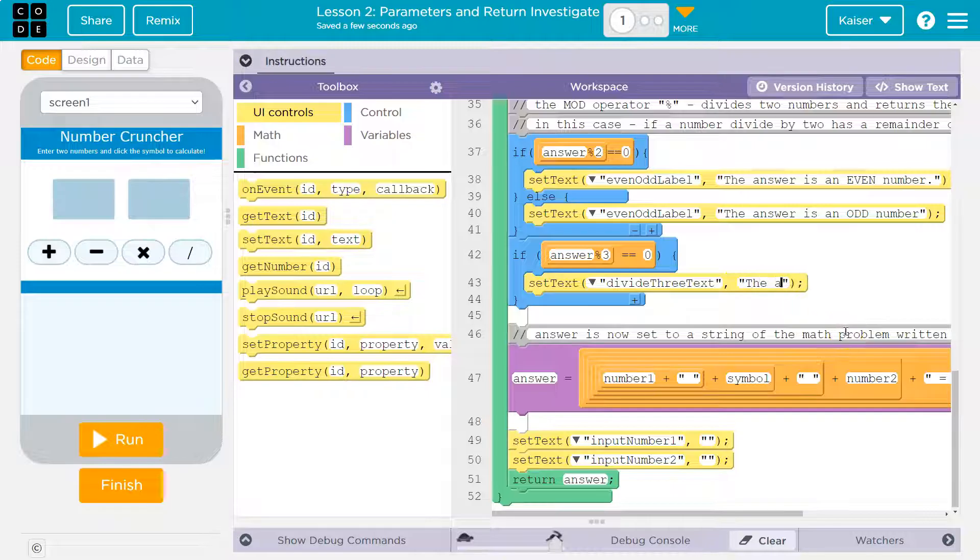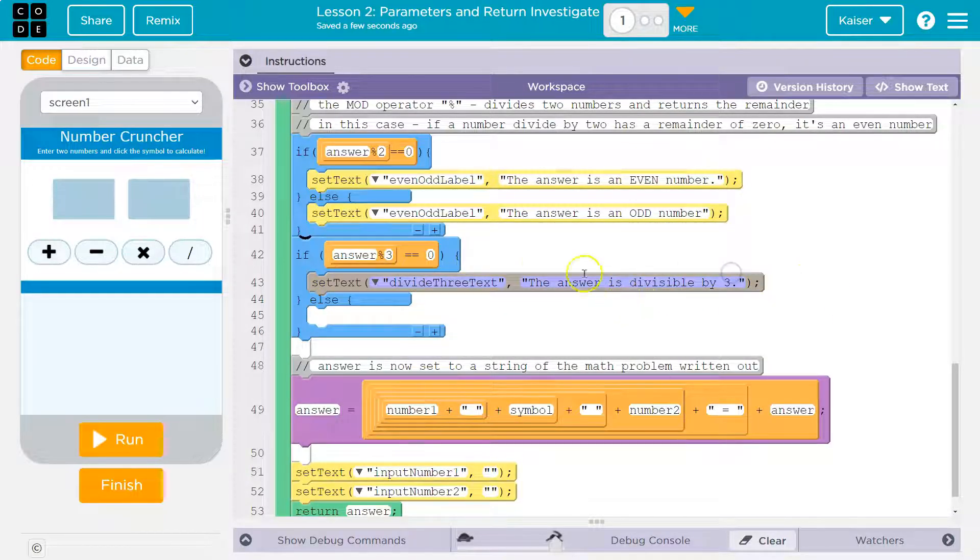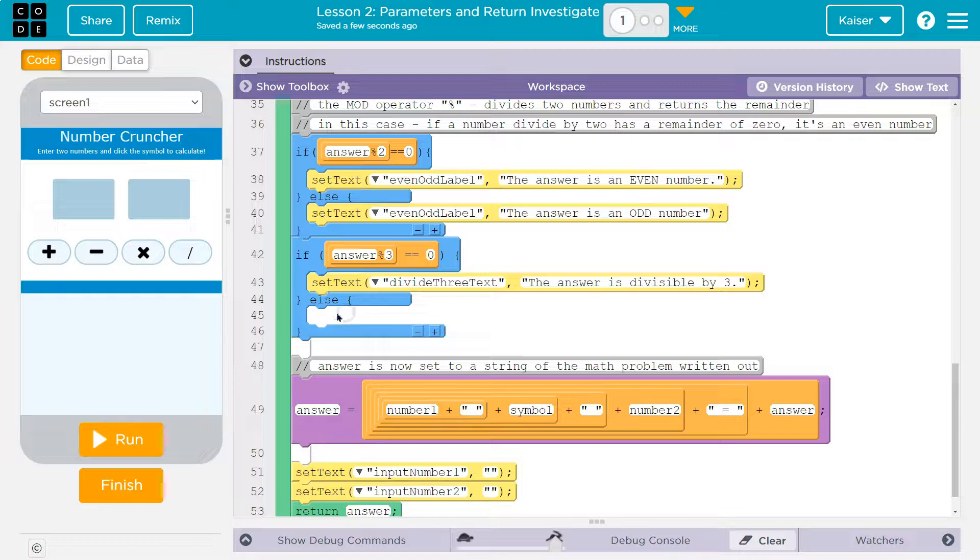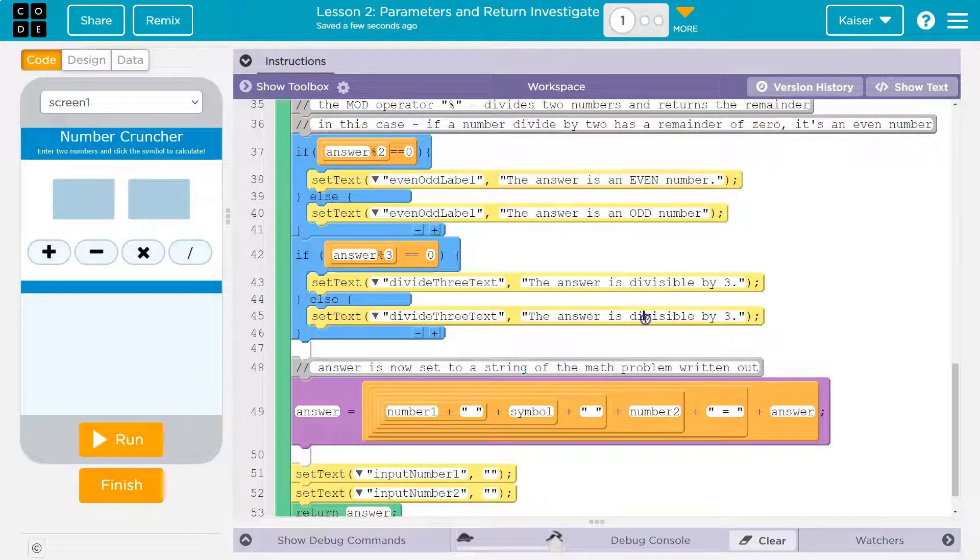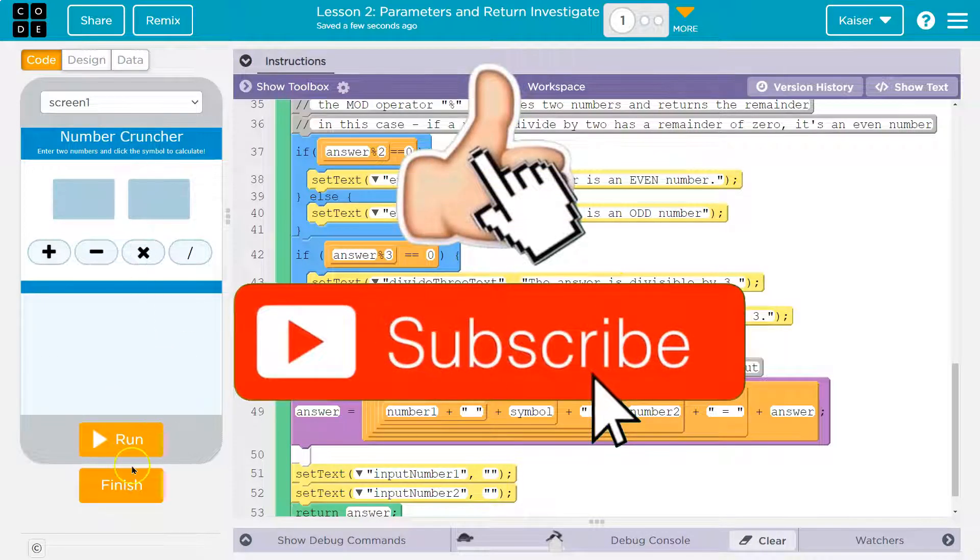And now here I'm going to do a set text. Divide three text. And what am I going to set it to? Well, if this is true, the answer is divisible by three, else it's not. So in all other cases, it's not. I'm going to highlight this copy. I'm going to move this black mark here and hit paste. The answer is not divisible by three. That not's important. You might want to capitalize it. Let's try it out.